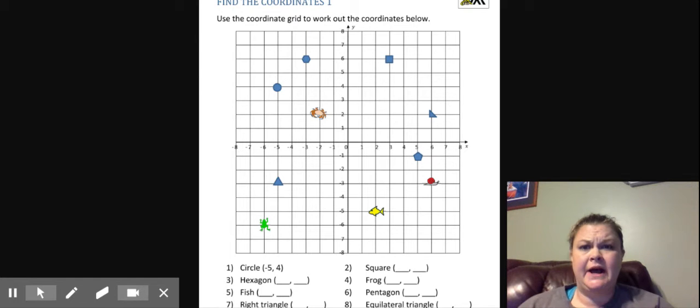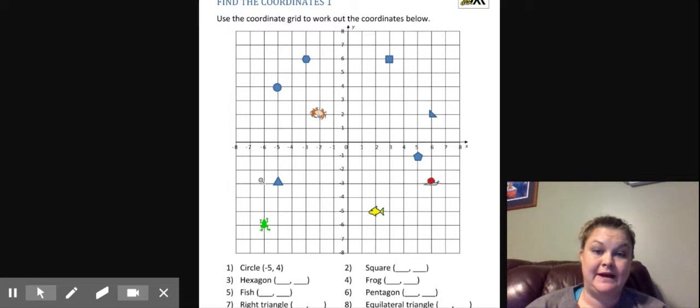Every spot on the coordinate plane is like a location, like an address that you can find anything on. This one happens to increase in increments of one whole. You might see a coordinate grid with fractions in between the numbers or decimals, but this one is using wholes.